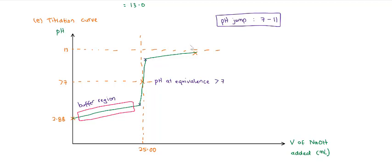After the equivalence point, the weak acid is the limiting reactant, so there is no more weak acid. We have strong base and salt. Strong base and salt is not a buffer, so there is no buffer region after the equivalence point.